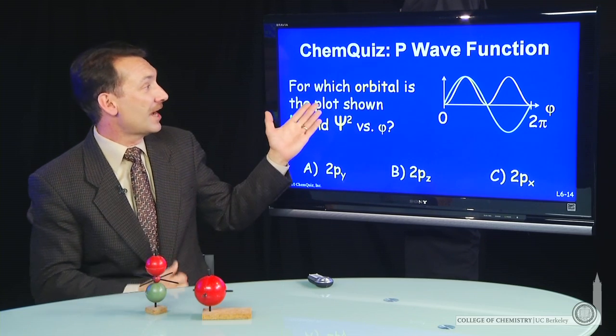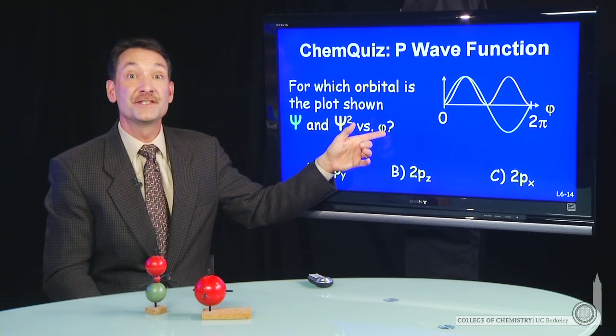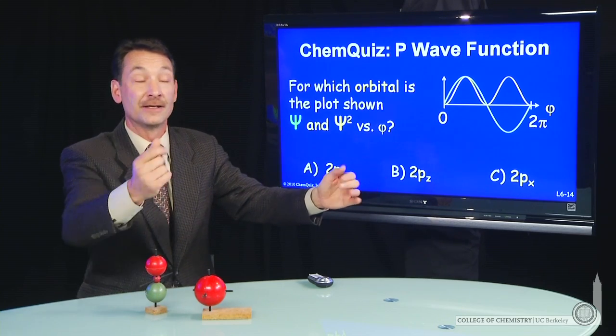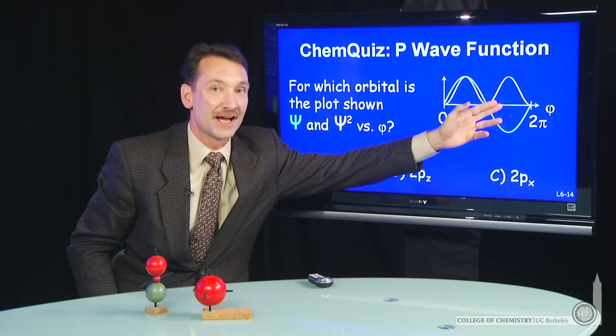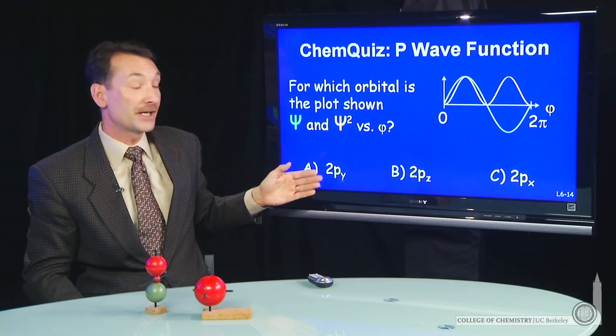So for p orbitals, I've written a plot of psi and psi squared versus phi, that angle from the positive x-axis. And I want to know, I've plotted psi and psi squared versus phi. Which orbital am I talking about?